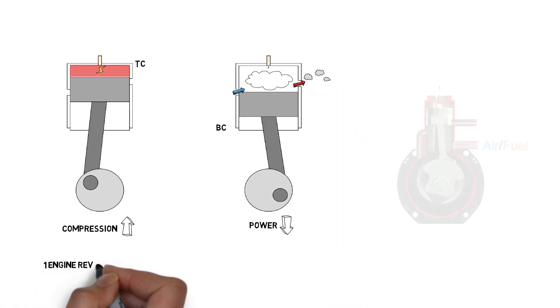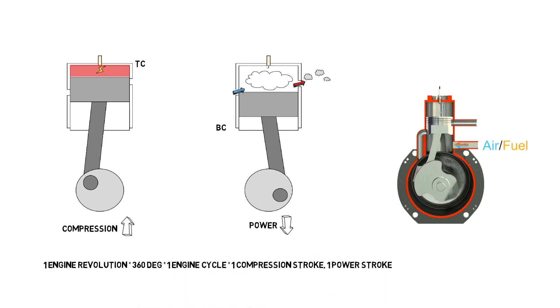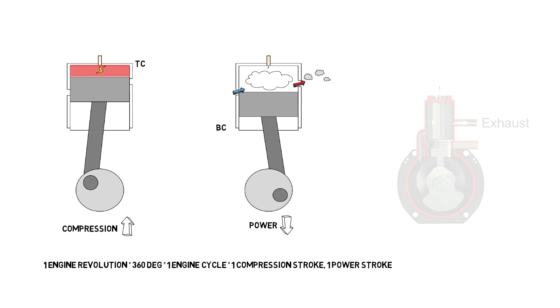In a nutshell, one engine revolution, which equals 360 degrees, equals one cycle. This includes one compression stroke and one power stroke.